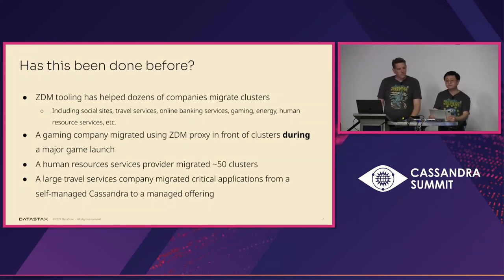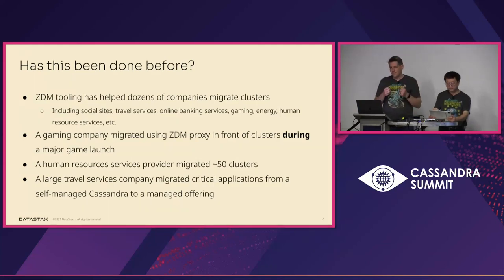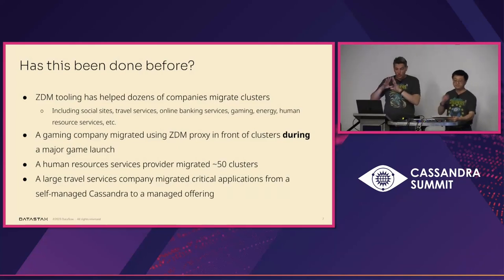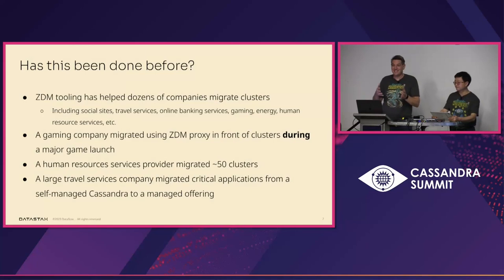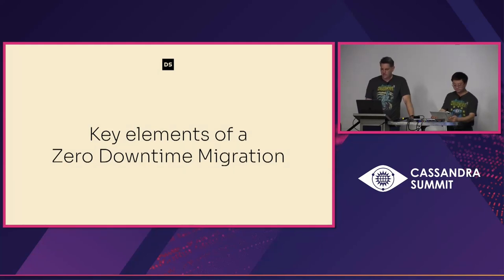Has this been done before? Yes — we've been doing it for a little over two years; development started about three years ago. We've categorized customers by verticals because they often have different tolerances for security, SLAs, and throughput. Just to give you an idea: there are companies with lots and lots of clusters, and my favorite example is a gaming company that released a massive online game with crazy bursty traffic and was using the proxy to bifurcate traffic during the production launch — a great validation that this won't fall over. The data footprint was 20-plus terabytes, and in the background they were migrating all the historical data.